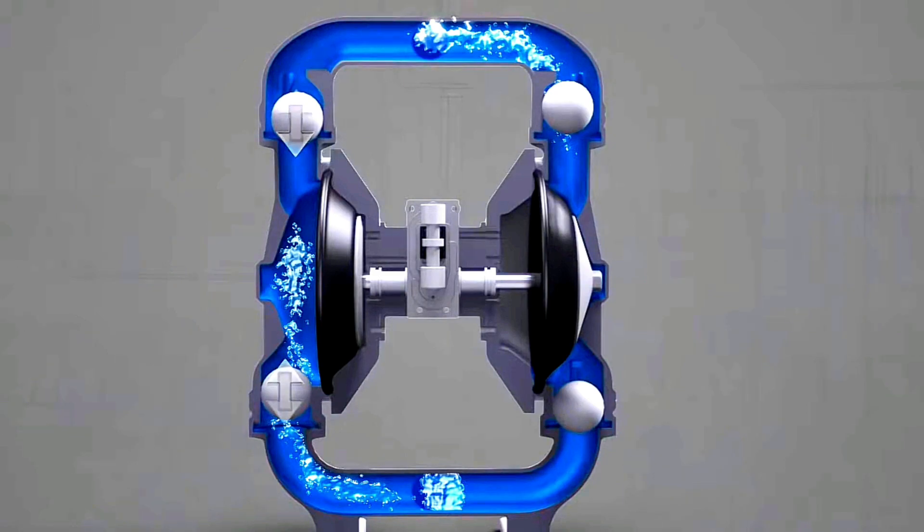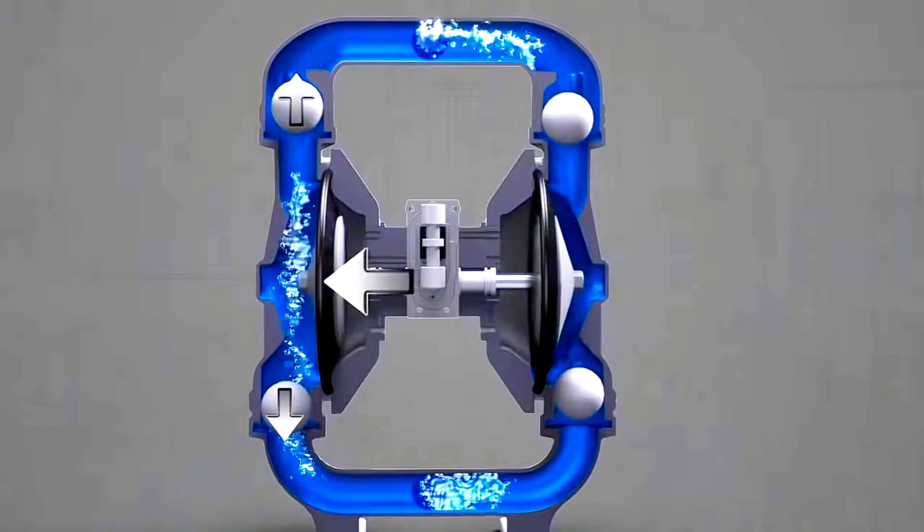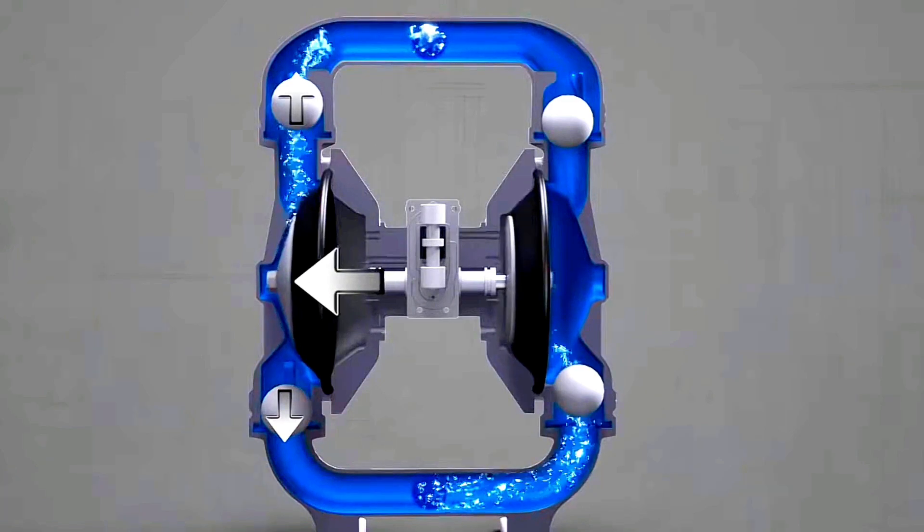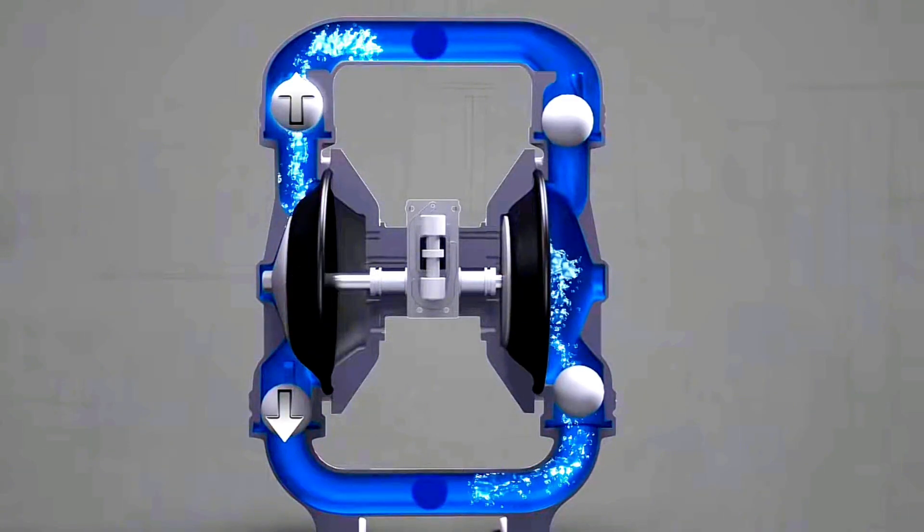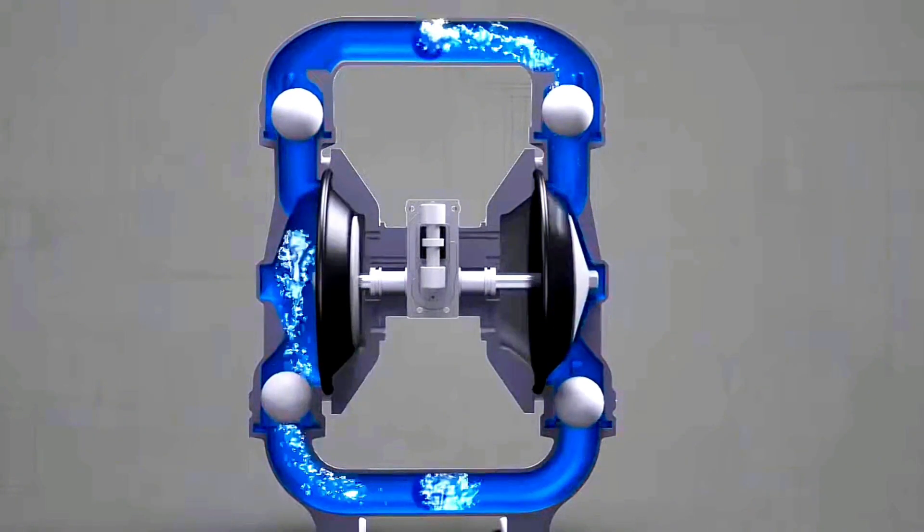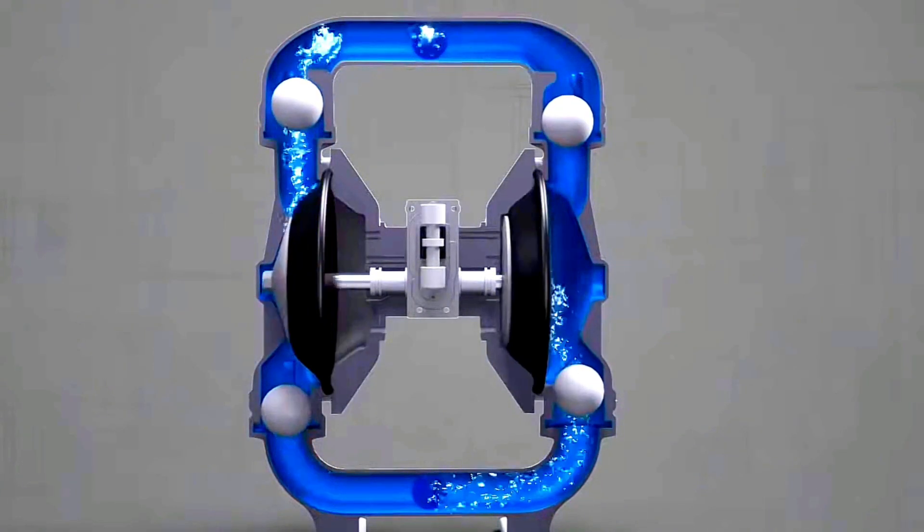As a diaphragm moves outward, the discharge motion causes the balls to move away from each other. As this happens, the top valve opens and the bottom valve closes. This allows liquid to exit the chambers and discharge through the top port. This process constantly alternates between the two chambers to create a continuous cycle.